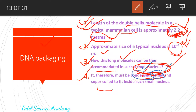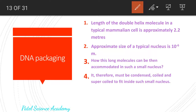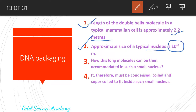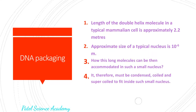To fit inside such a small nucleus, it must be condensed, become shortened, compressed, coiled, and again super coiled. So what we have learned: the length of the double helix molecule is 2.2 meters; the approximate size of the typical nucleus is 10 raised to the power minus 6 meters; and it fits into the small nucleus by condensation, coiling, and super coiling. Now we'll go for the next point.